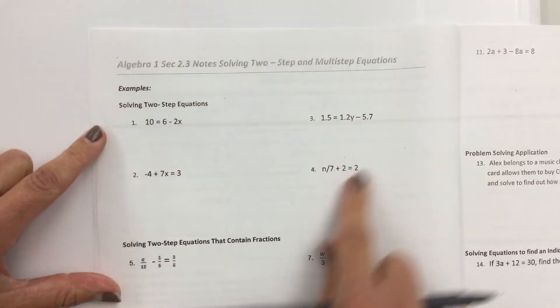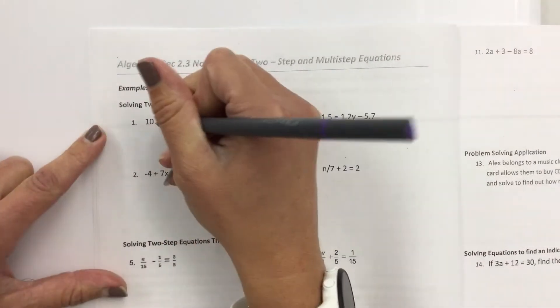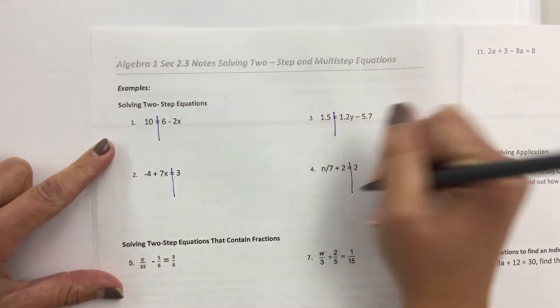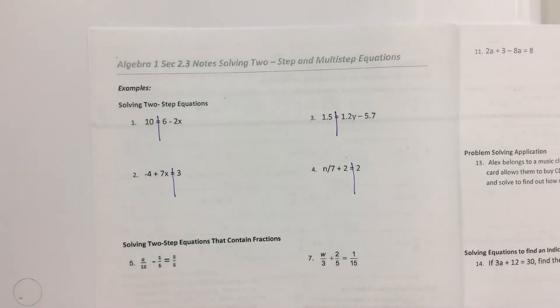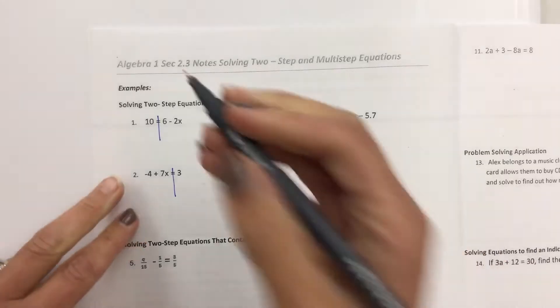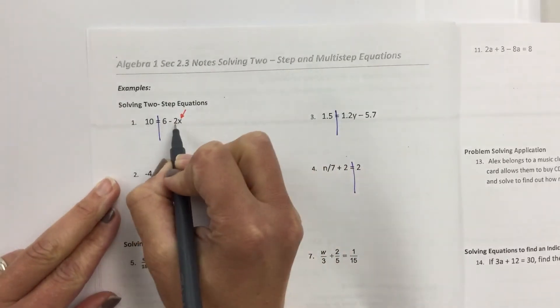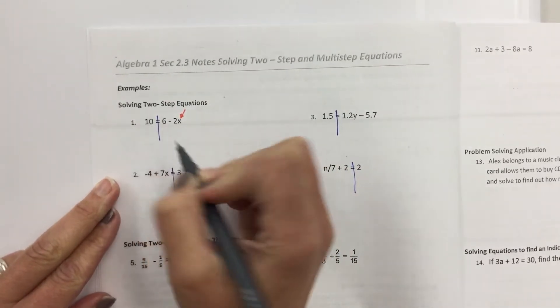So the first type, these are just your basic two-step equations. Again, this is where it comes in handy to have some general rules that you follow every time, like drawing a line down the middle of your equation. The next thing I do is I locate the variable. So like right here, I've got the x, and I've got two numbers with the x that I want to move. I want to move the 6 and the 2.